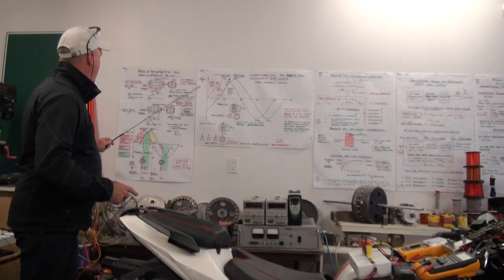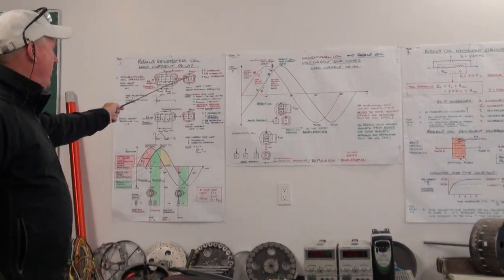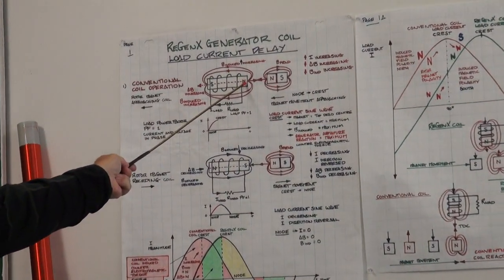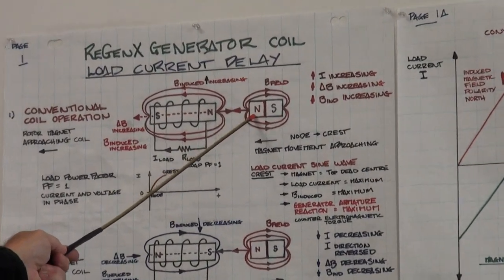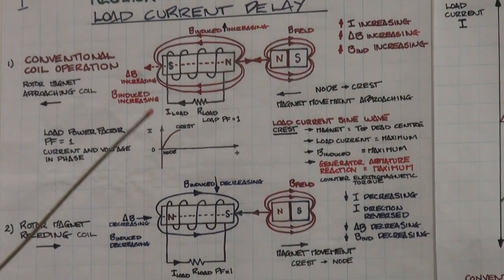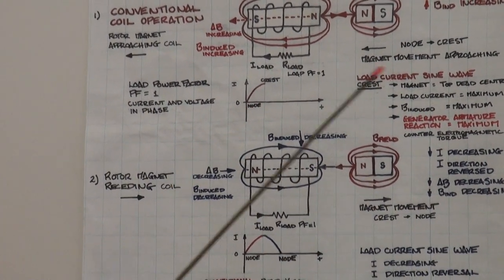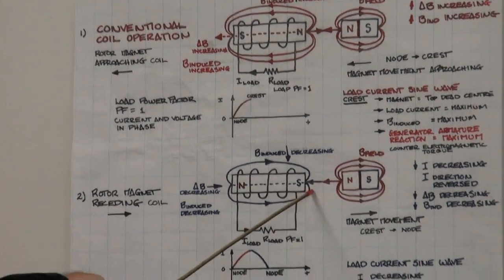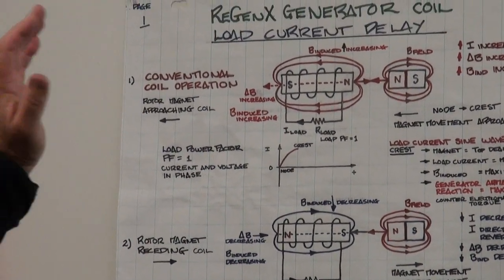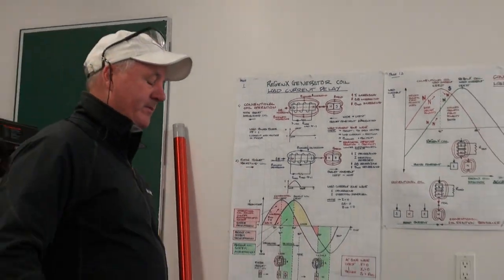In a conventional generator coil, when a north pole magnet approaches the coil, an induced magnetic field is produced so that a north pole opposes the approaching north pole rotor magnet. When the magnet moves away, the current direction changes and a south pole is induced in the core, which opposes the magnet's departure. This is Newton's third law — Lenz's law — for every action there's an equal and opposite reaction.